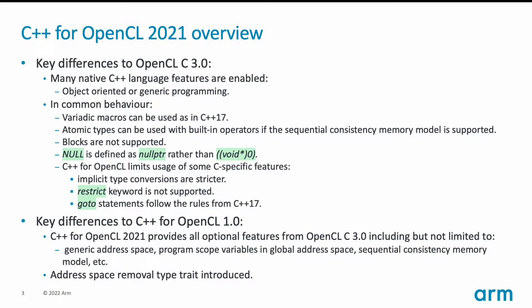Blocks are not supported, but lambda functions can be used in most cases as a replacement apart from enqueue kernel. The NULL macro is defined as a null pointer literal instead of using an integer literal, as it was in OpenCL C. There are also a number of differences coming from the fact that C++ is stricter than C — for example, type conversions are stricter, the keyword restrict is not supported, and goto statements have slightly different semantics.